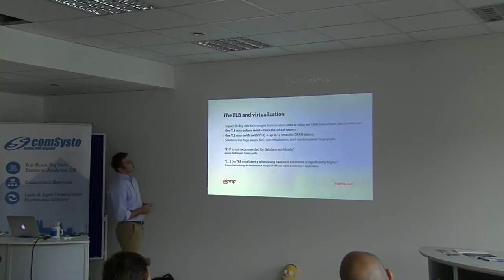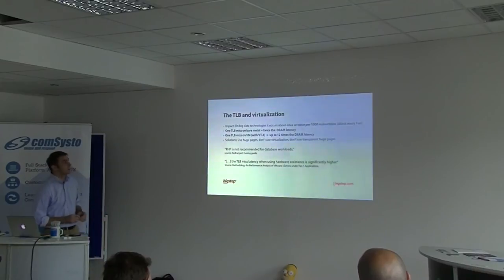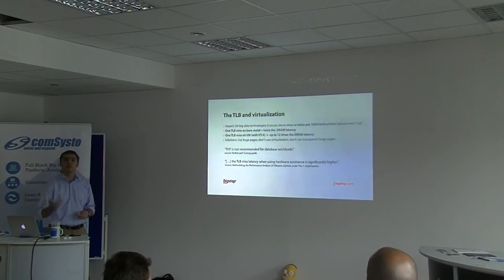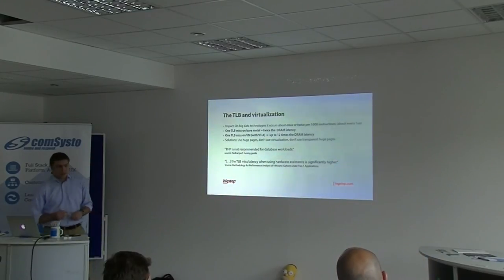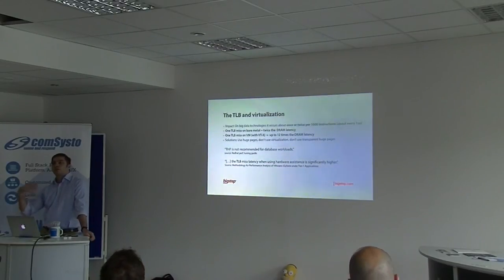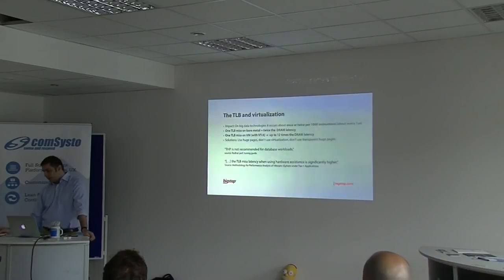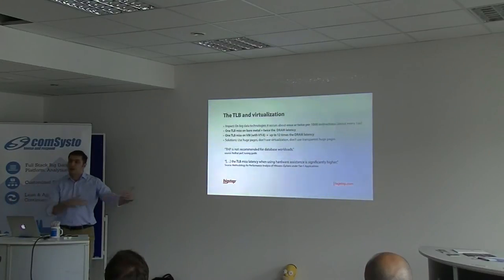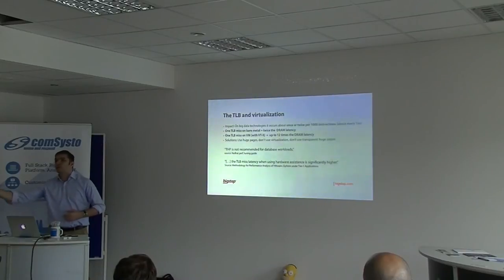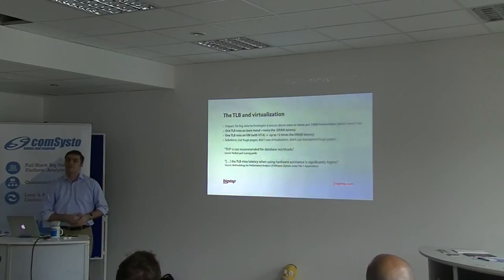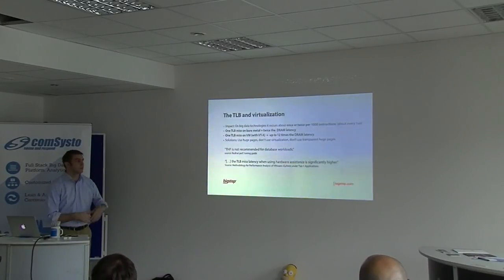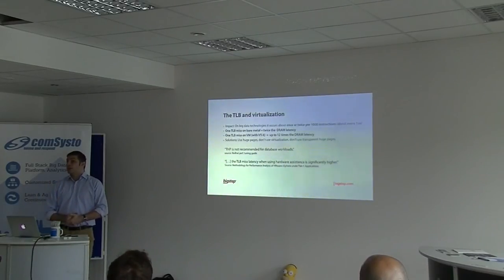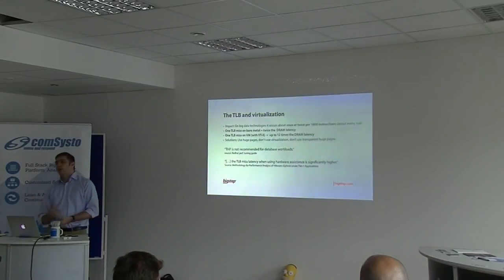A TLB miss on bare metal is about twice the DRAM latency. One TLB miss on a VM is about 12 times higher. The reason is that every virtual machine thinks it has physical memory, but that's actually a virtual memory space — it's just an application inside a hypervisor. So it's a virtual-to-virtual-to-physical translation for every memory access. This would be incredibly slow. That's why early virtualization technologies like QEMU were tremendously slow.